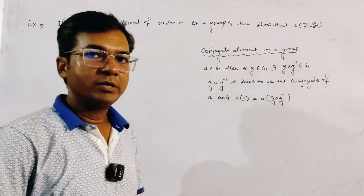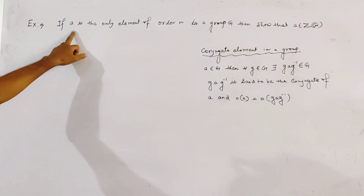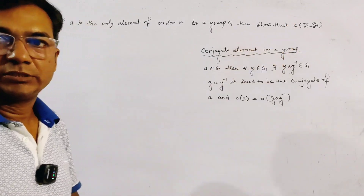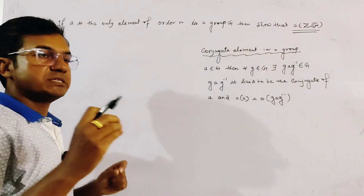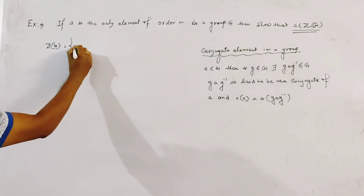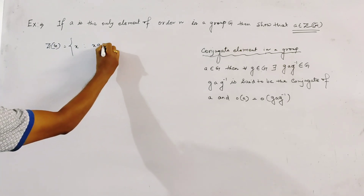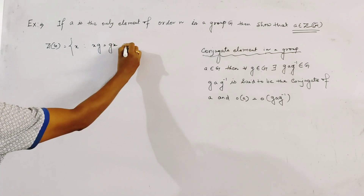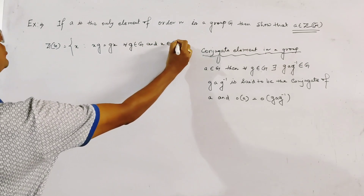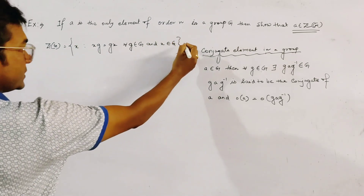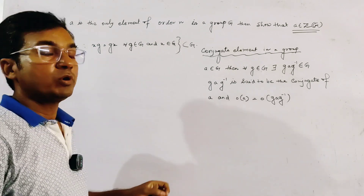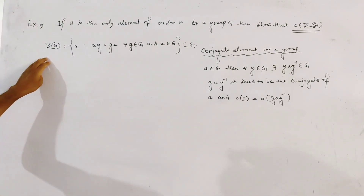A problem from group theory: if a is the only element of order n in a group G, show that a belongs to Z(G). Z(G) is the center of the group, defined as the set of elements x such that x·g = g·x for all g in G, where x also belongs to G. This is a subgroup of G and also a normal subgroup of G.